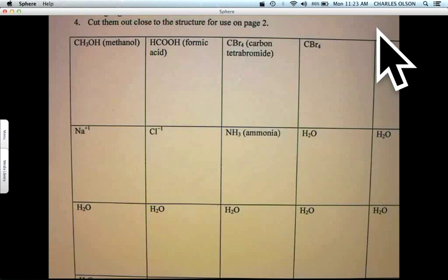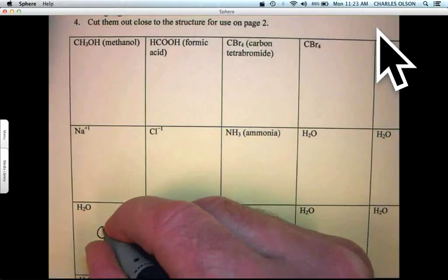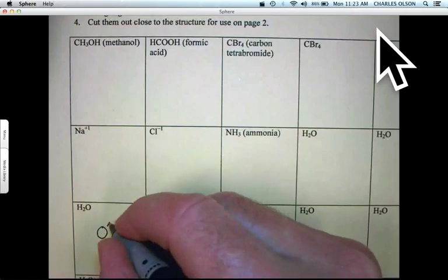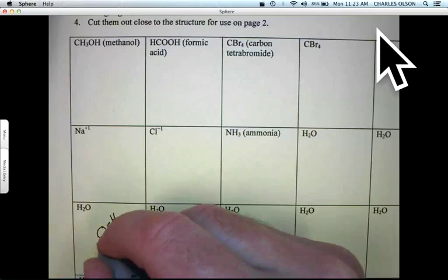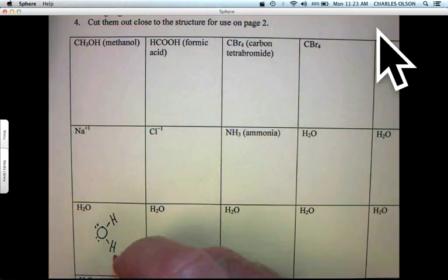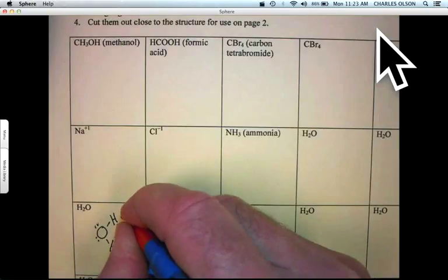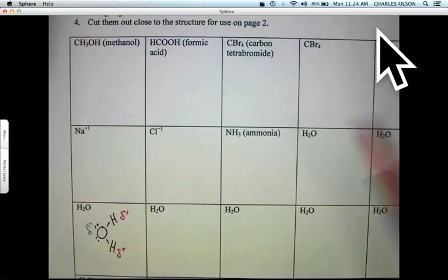Let's get some practice drawing molecules. Let's start with H2O. We remember, of course, HONK: 1, 2, 3, 4. So hydrogen makes one bond, oxygen makes two. We're going to mark the partial positives in red and the partial negative oxygen in green. And that's water.